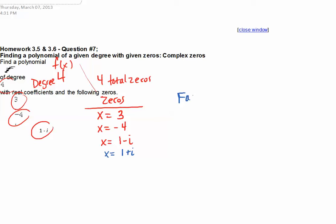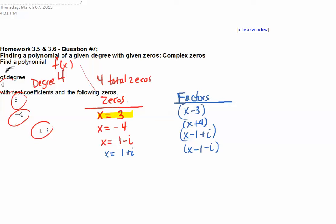Next we turn the zeros into factors by setting each equal to 0. So I subtract 3 and get x minus 3 as one factor. I add 4 to get x plus 4 as another factor. Then I subtract 1 and add i to get x minus 1 plus i, and on the last zero I have x minus 1 minus i. So we set up our list of zeros and turn them into factors by setting them equal to 0.